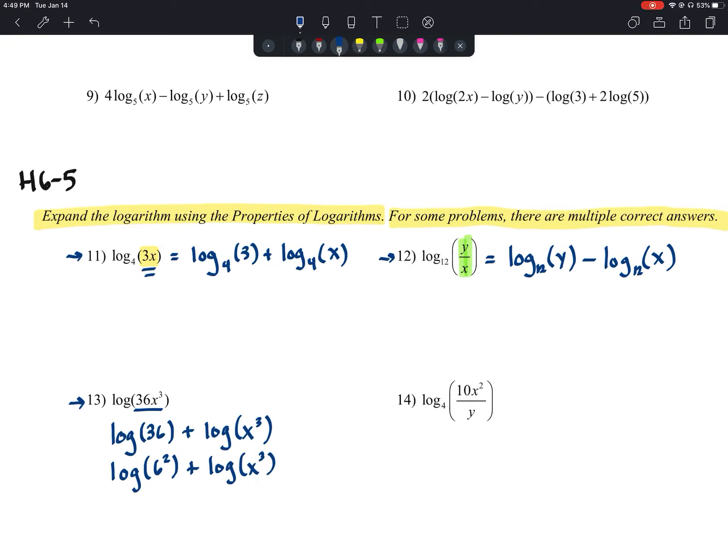We could take this 2 and move it out in the front and take this 3 and move it out in the front. So what we're left with is 2 times the log of 6, and we're going to add to that 3 times the log of x.